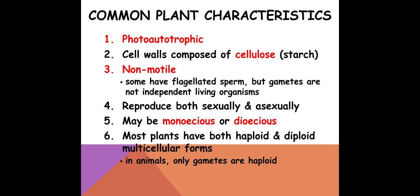Plants can reproduce sexually and asexually. They can be monoecious — remember, mono means one — so one plant with male and female structures. Or dioecious, meaning plants that have separate male and female plants. And then most plants have this haploid and diploid multicellular form; we call that the alternation of generations. Remember, that's different from animals — in animals, only the gametes are haploid.